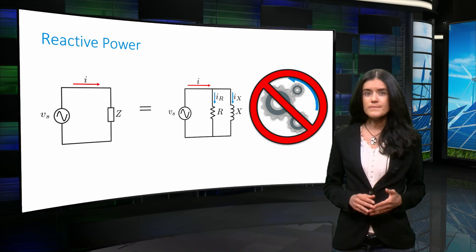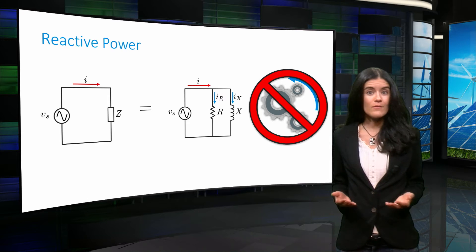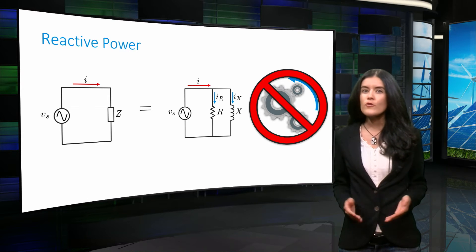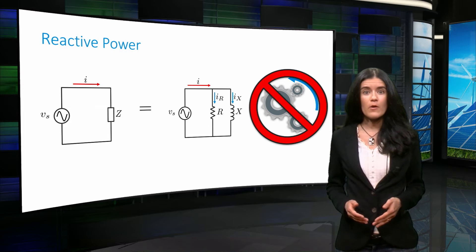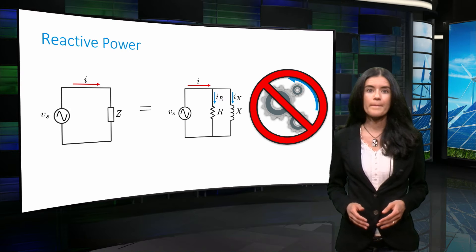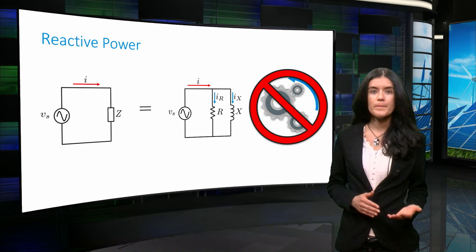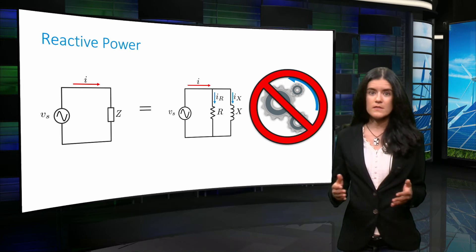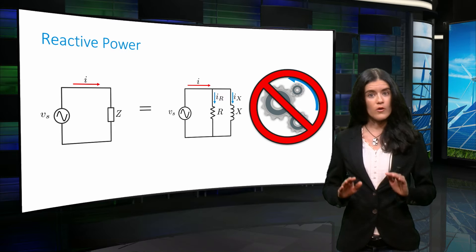In contrast, reactive power is the portion of power that returns to the source each cycle and therefore cannot be used by the load to do work. Reactive power is considered in AC systems. In this course, we will not deal with reactive power, but it is important to mention that the efficiency of the system increases as the reactive power's flow decreases.